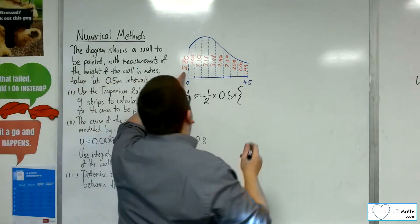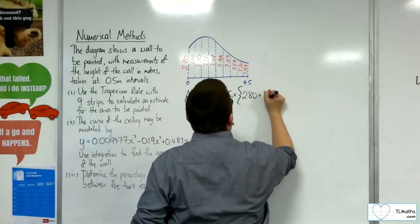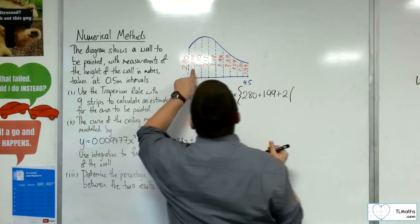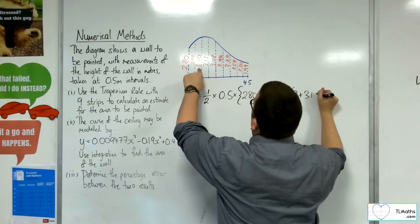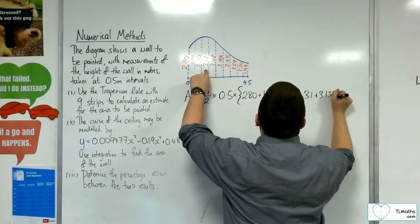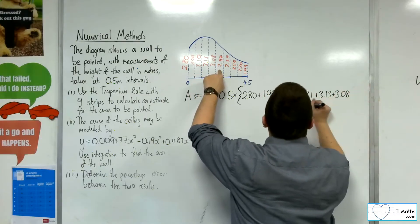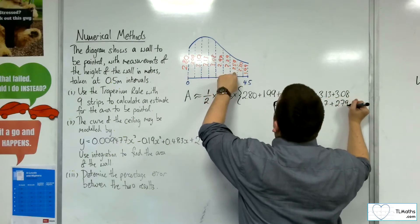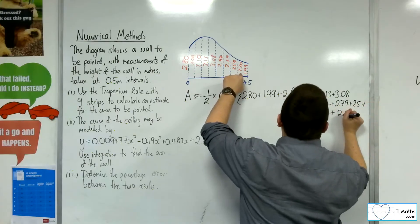We've got the first, which is 2.80, plus the last, 1.99, plus 2 lots of the rest, the sum of the rest. So we've got 3 plus 3.1 plus 3.13 plus 3.08 plus 2.97 plus 2.79 plus 2.57 plus 2.30.